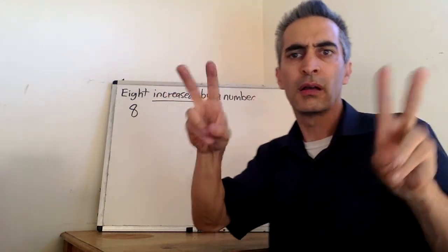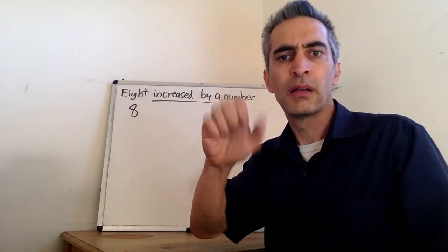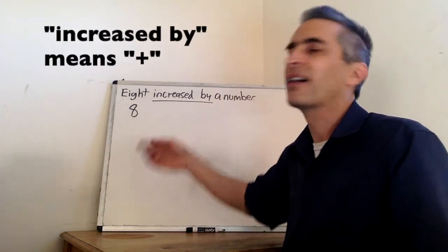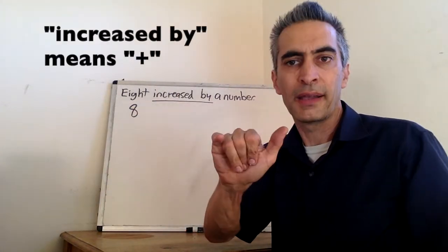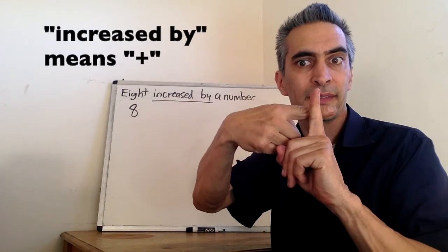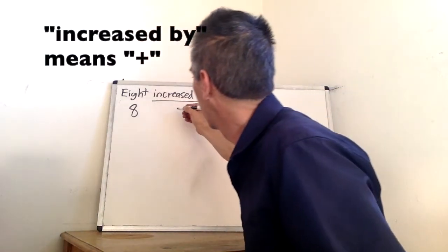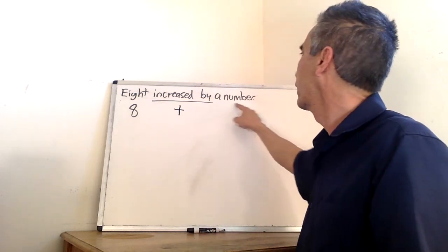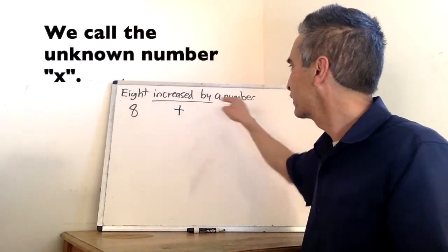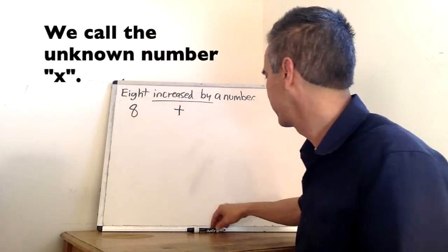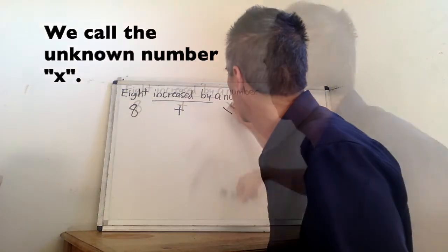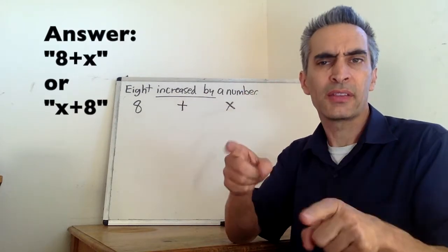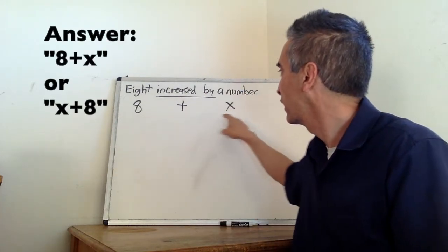These two words. What do they mean? Increase by. That means plus. And this, well, we know what this means. This means number. The number, we're going to name it x. The answer is eight plus x.